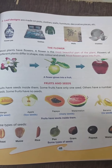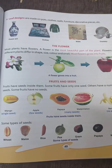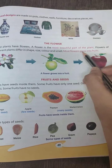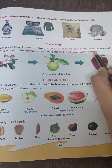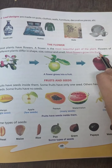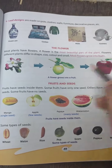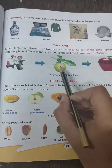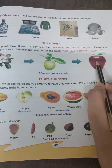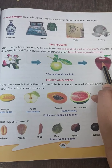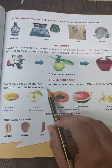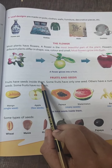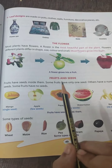Most flowers grow into fruits. For example, the apple first appears as a flower, then grows bigger into a proper apple. Fruits have seeds inside them.